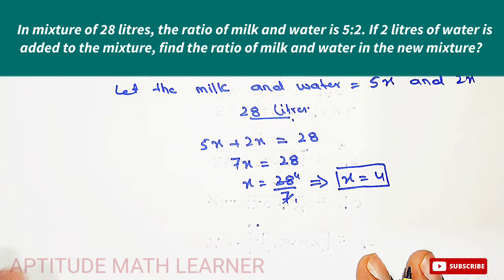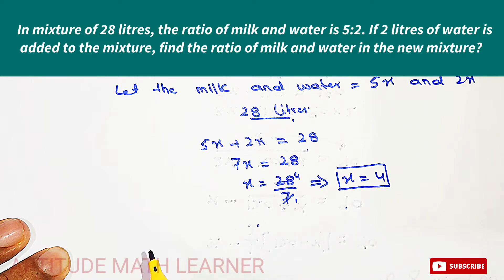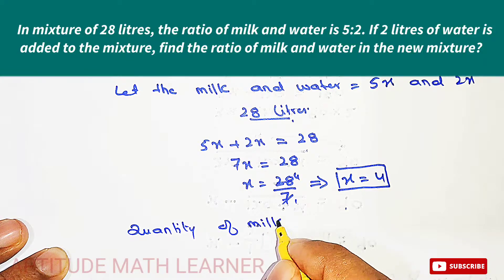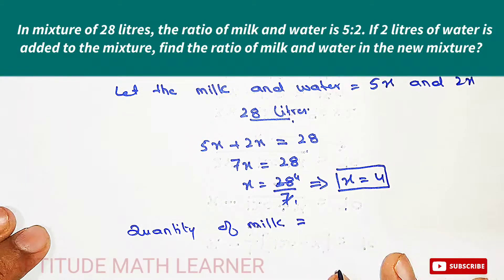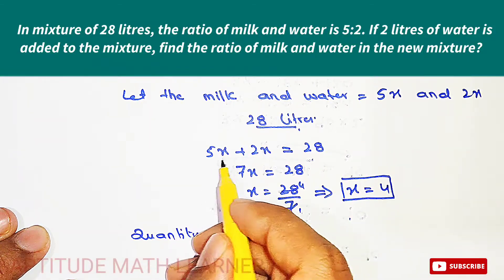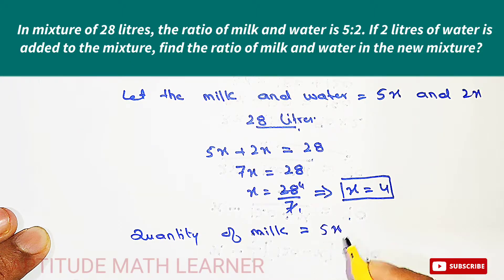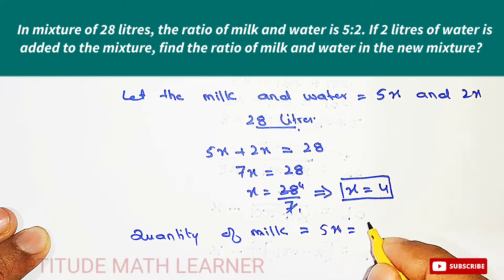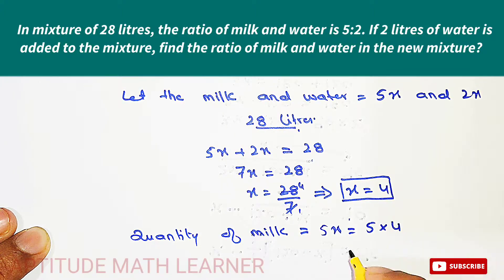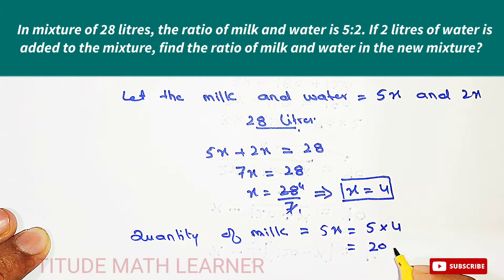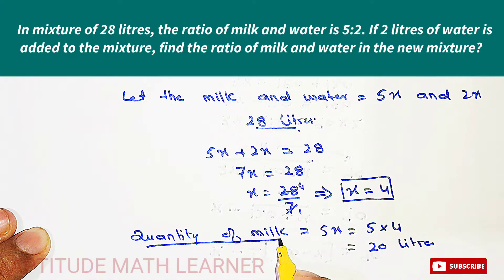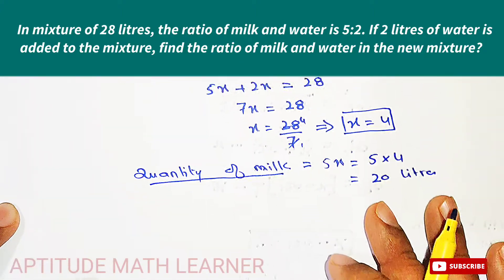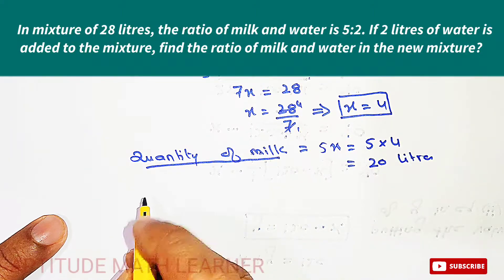Now the next thing is to find the quantity of milk. Milk is in the ratio 5x, so 5x equals 5 multiplied by 4, which is 20. So 20 liters is the quantity of milk.